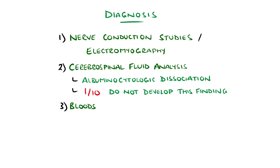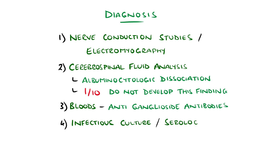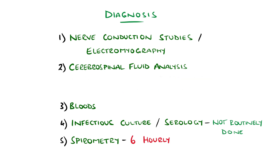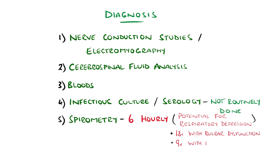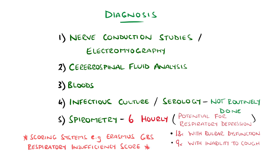Bloods can be taken looking for particular anti-ganglioside antibodies, but a negative result doesn't rule out Guillain-Barré syndrome. Culturing or serology for the specific triggering infection is not routinely done in clinical practice. Bedside spirometry is done regularly, typically every six hours, due to the potential for rapid progression and involvement of the respiratory muscles. The risk of this is nearly 18-fold with bulbar dysfunction, and 9 times with the inability to cough, and is also associated with the inability to lift the head from the pillow. Calculators like the Erasmus Guillain-Barré syndrome respiratory insufficiency score can help predict the likelihood based on multiple risk factors.